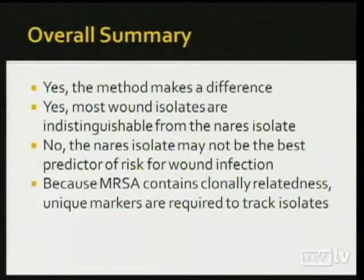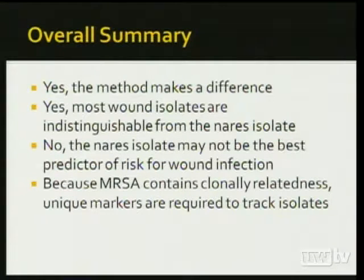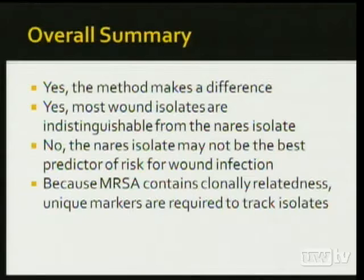Overall, yes, the method you use makes a difference — and these methods are often used as the final word, so you need to choose carefully. Yes, in most cases when a patient has both wound and nares isolates, about 80% of the time the two isolates were indistinguishable. But the nares isolate may not be the best predictor of risk for wound infection. And because MRSA contains a large amount of clonal relatedness, we need to keep looking for unique markers required to track isolates.